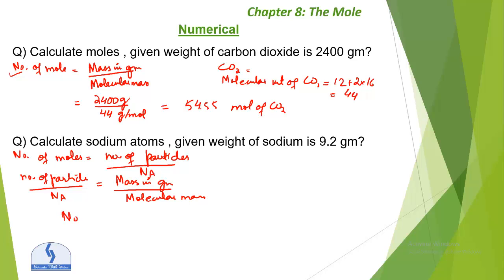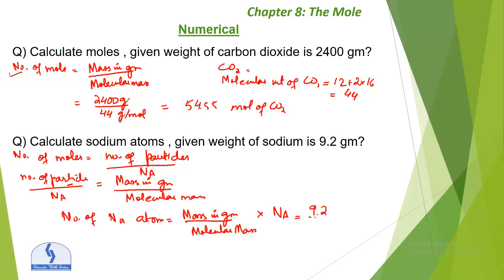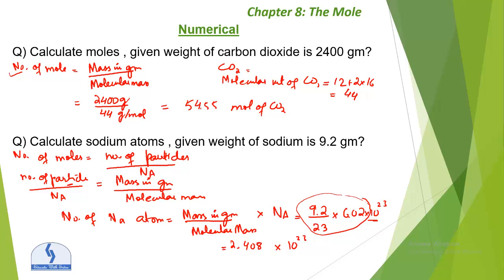Rearranging: number of particles equals (mass in grams divided by molecular mass) multiplied by Avogadro's number. Plugging in values: mass = 9.2 g, atomic mass of sodium = 23, Avogadro's number = 6.02 × 10²³. Calculate 9.2 × 6.02 ÷ 23 in the calculator first, then multiply by 10²³. The result is 2.408 × 10²³ atoms of sodium.